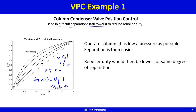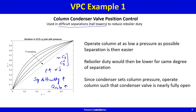One would like to operate such tall towers at as low a pressure as possible because then the separation is easier. Reboiler duty — or alternatively condenser duty — would then be lower for the same degree of separation. Condenser duty becomes crucial in systems where refrigeration is required to condense the overhead vapor.